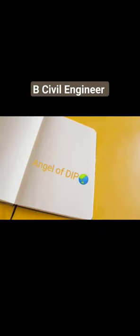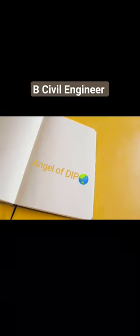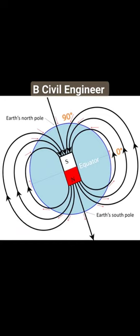In this video we will discuss about angle of dip. The angle of dip is the angle between earth's surface and earth's magnetic field lines. In this pic we can see that the angle between earth's surface and earth's magnetic field at the equator is 0 degrees, and at the dipole the angle is 90 degrees.